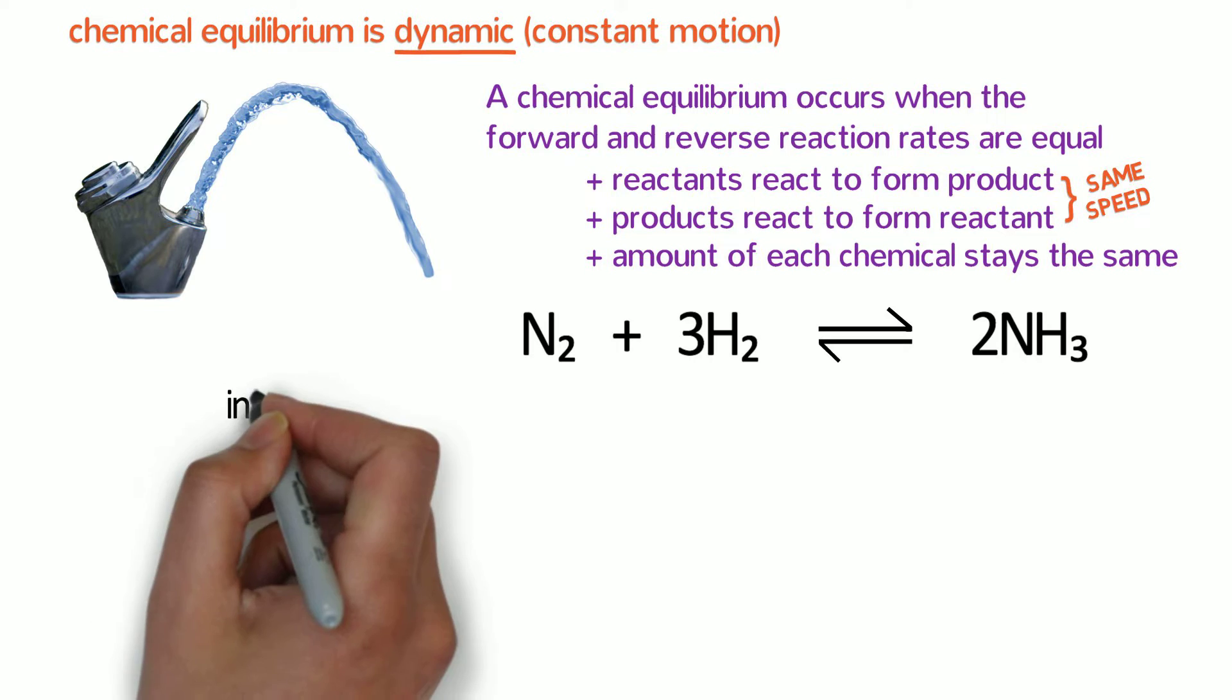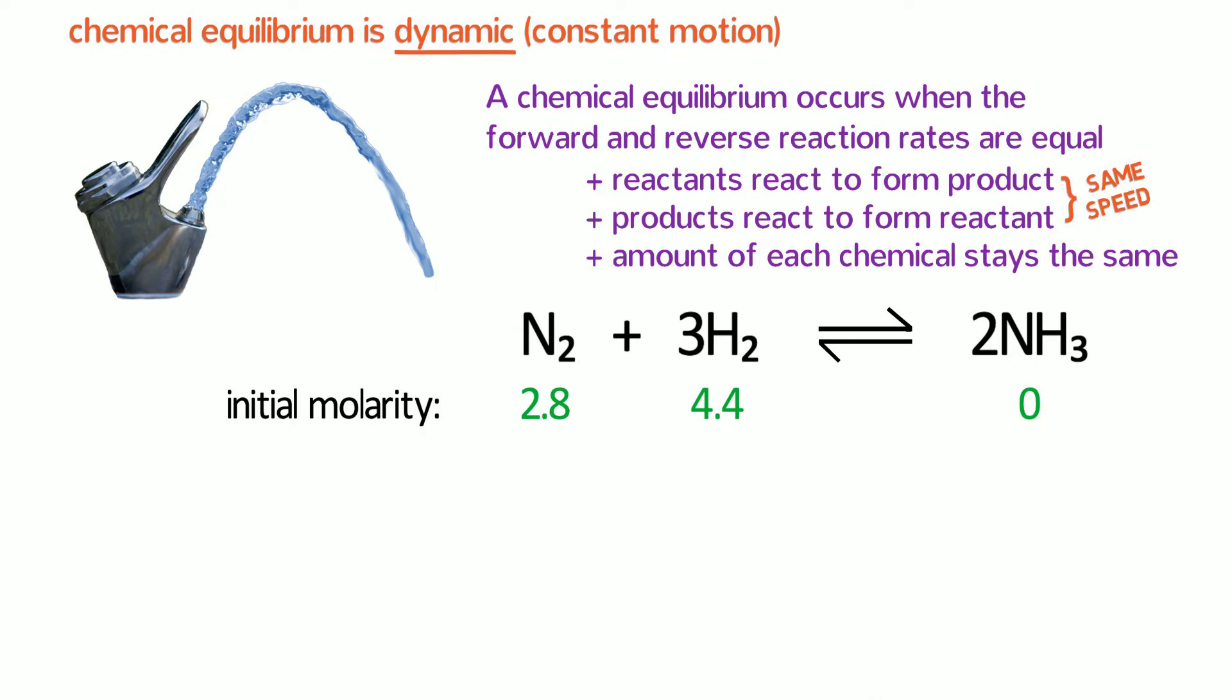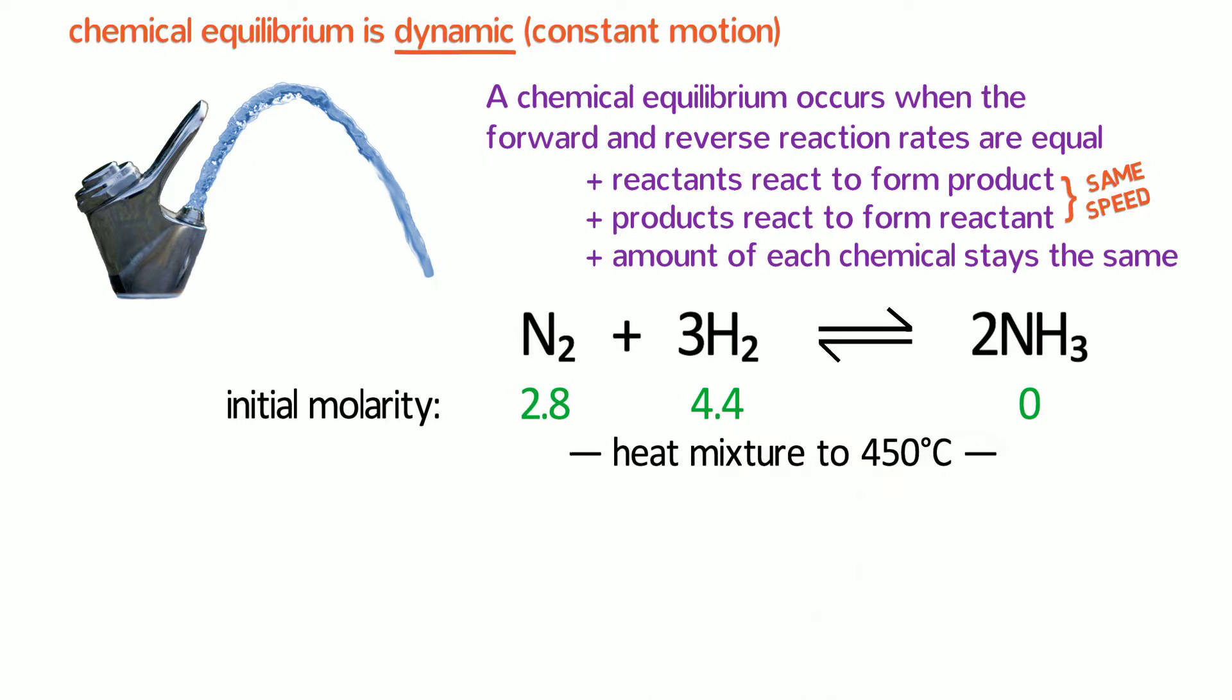Suppose that we have a 1 liter container, and we fill it with 2.8 moles of nitrogen, 4.4 moles of hydrogen, and an appropriate catalyst. We heat the mixture to 450 degrees Celsius, and we observe that the concentration of nitrogen and hydrogen decrease as they turn into ammonia.